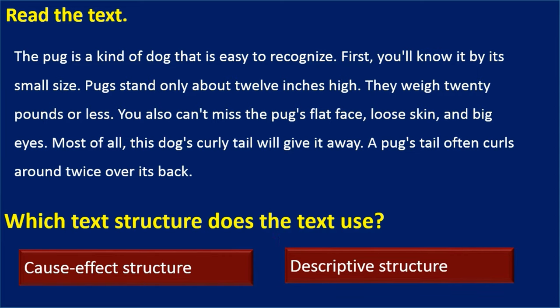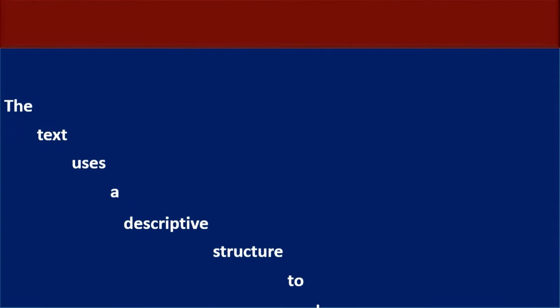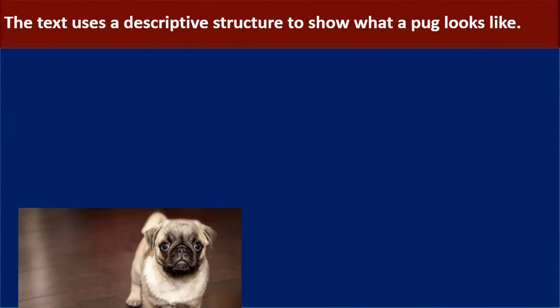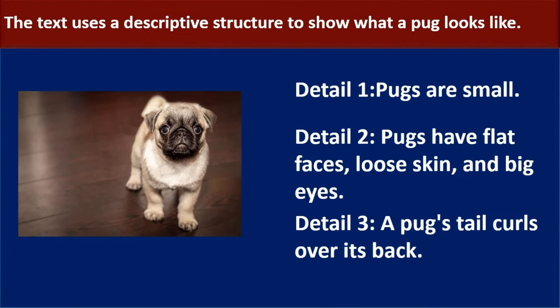The text uses a descriptive structure to show what a pug looks like. Detail 1: Pugs are small. Detail 2: Pugs have flat faces, loose skin, and big eyes. Detail 3: A pug's tail curls over its back.